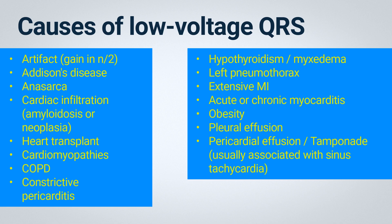Patients with acute or chronic myocarditis. Obese patients, as the distance between the heart and electrodes is typically increased. Patients with pleural effusion, similar to those with pneumothorax. And lastly, as we have seen, patients with pericardial effusion or tamponade. In these cases, sinus tachycardia is generally associated, as seen in the previous electrocardiogram.